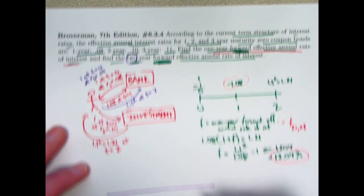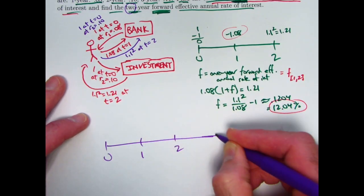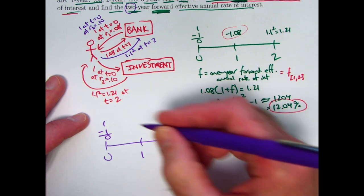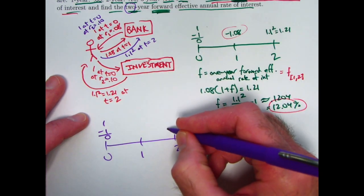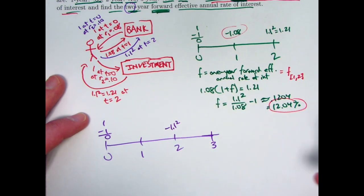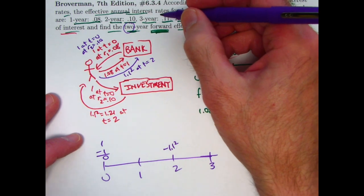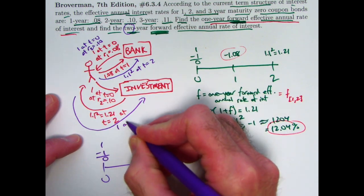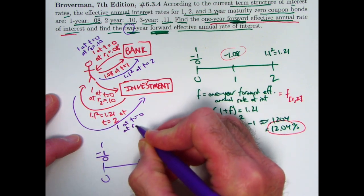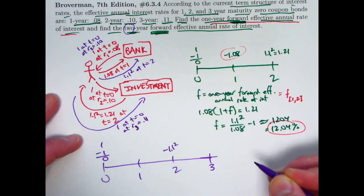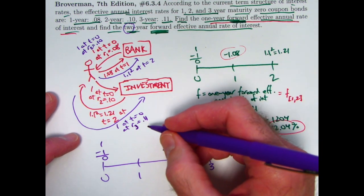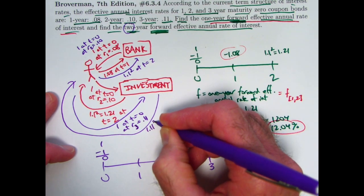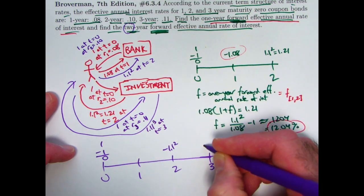Thinking about the timeline for this situation: we borrow and invest right away at time zero, so the net outlay at time zero is zero. But then we pay the bank back at time two — negative 1.1 squared, which is negative 1.21. We are investing in a three year zero coupon bond at time zero, at R3 equals 0.11. So at time three we get back 1.11 cubed.